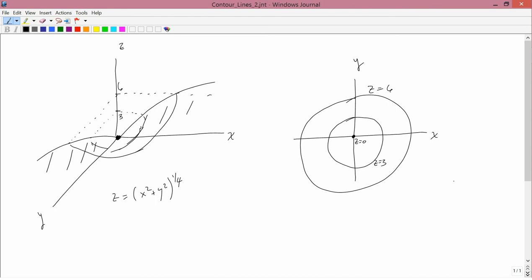But if you do that in this example, then the contour line graph would look like this.